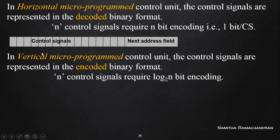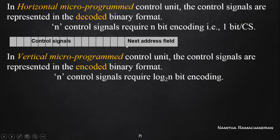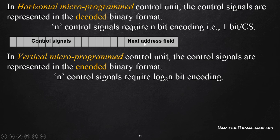This is the basic structure of a micro instruction. It has a control signal field and a next address field. The next address field is used to indicate the branch target address when we want to perform a branching operation — that is, when we want to stop sequential execution and execute a micro instruction present at a distant location in control memory. The branch target address is stored in this next address field.